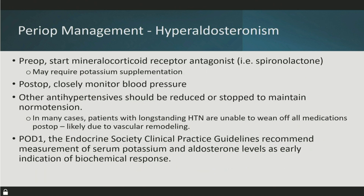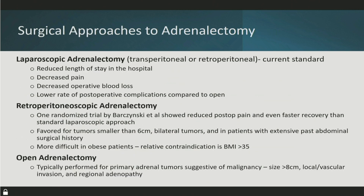For hyperaldosteronism, start a mineralocorticoid pre-operatively and supplement potassium as needed. Post-operatively, closely monitor blood pressure — many patients don't come completely off all their medications; if they're on five antihypertensives, they may only wean to one or two due to vascular remodeling. On post-op day one, check serum potassium and aldosterone level to confirm biochemical response.